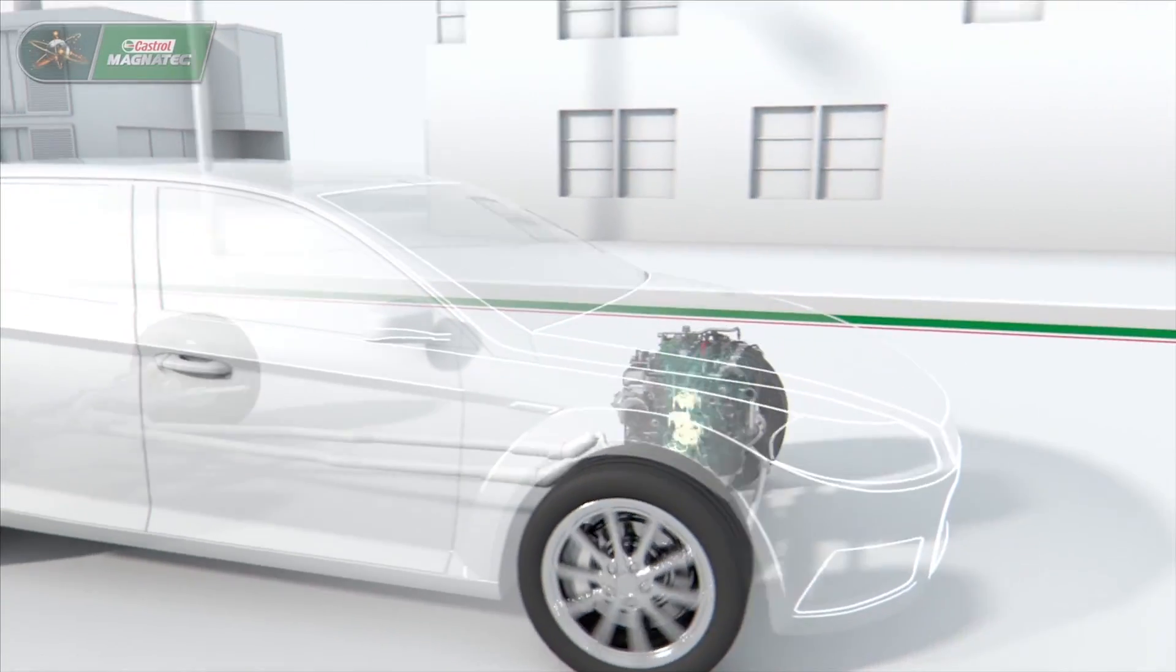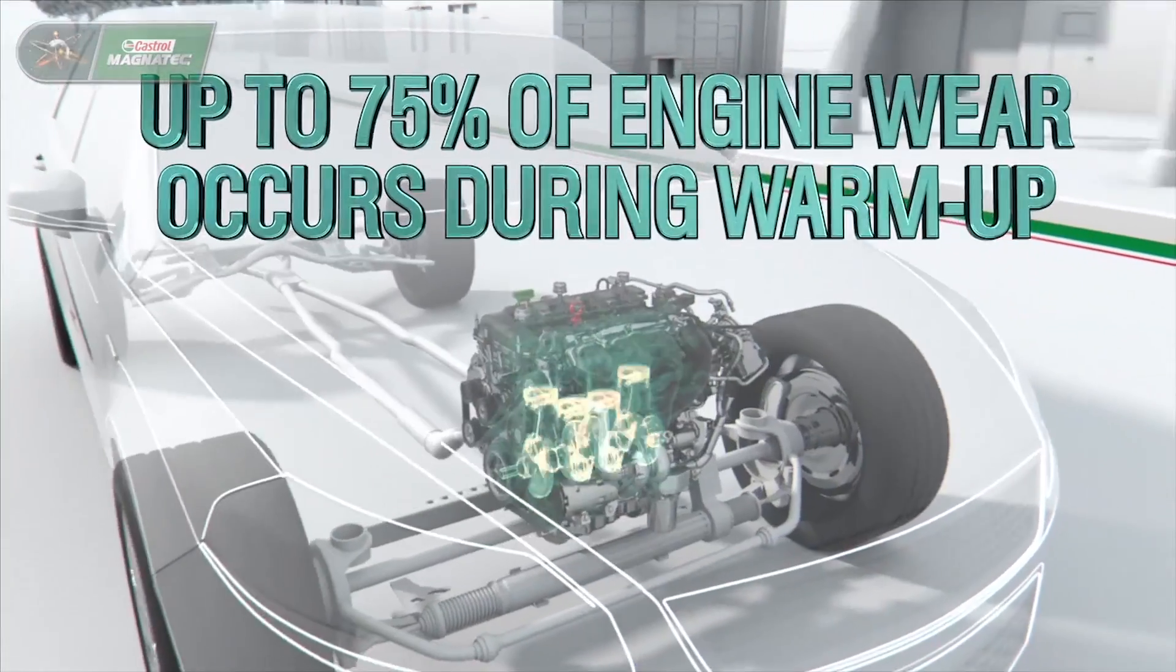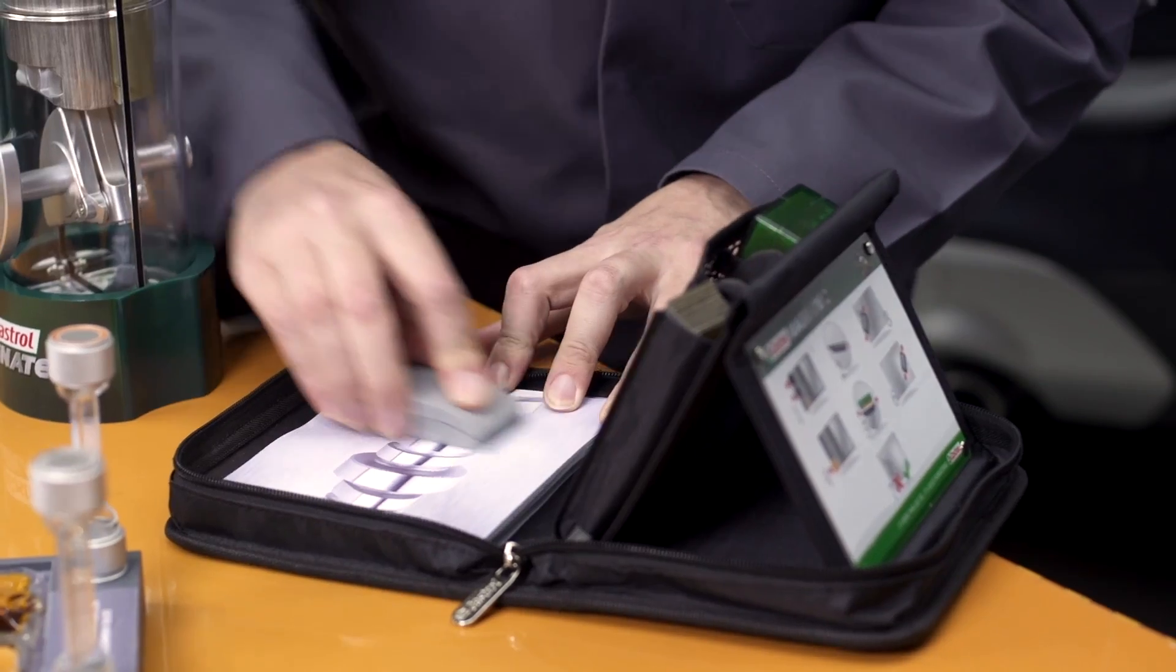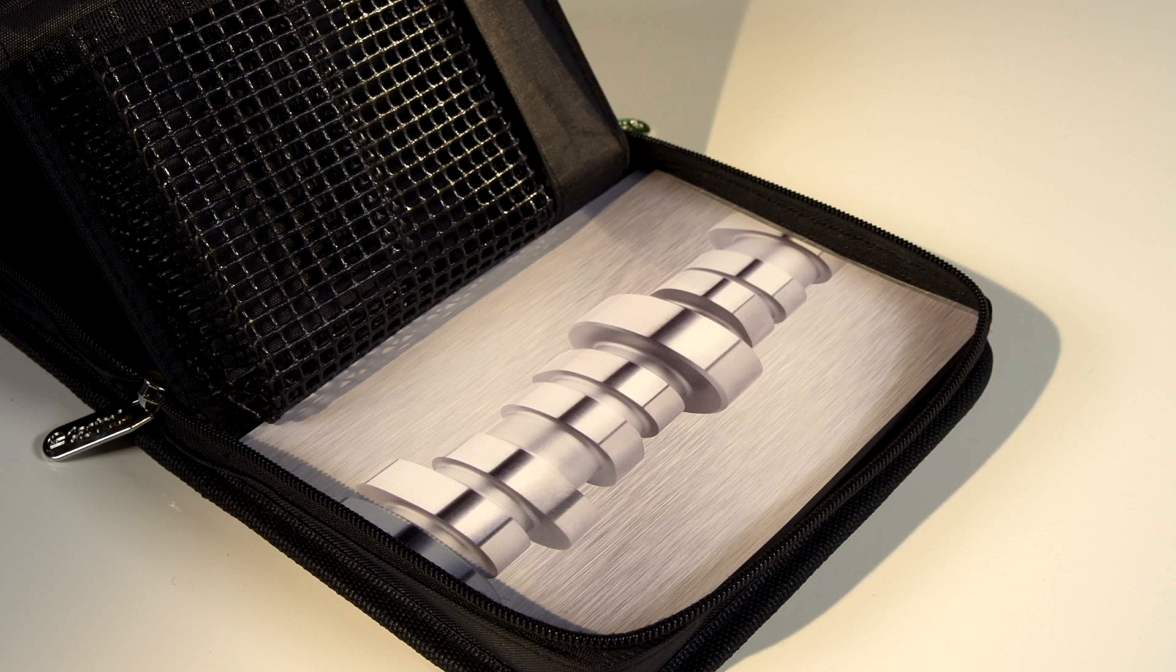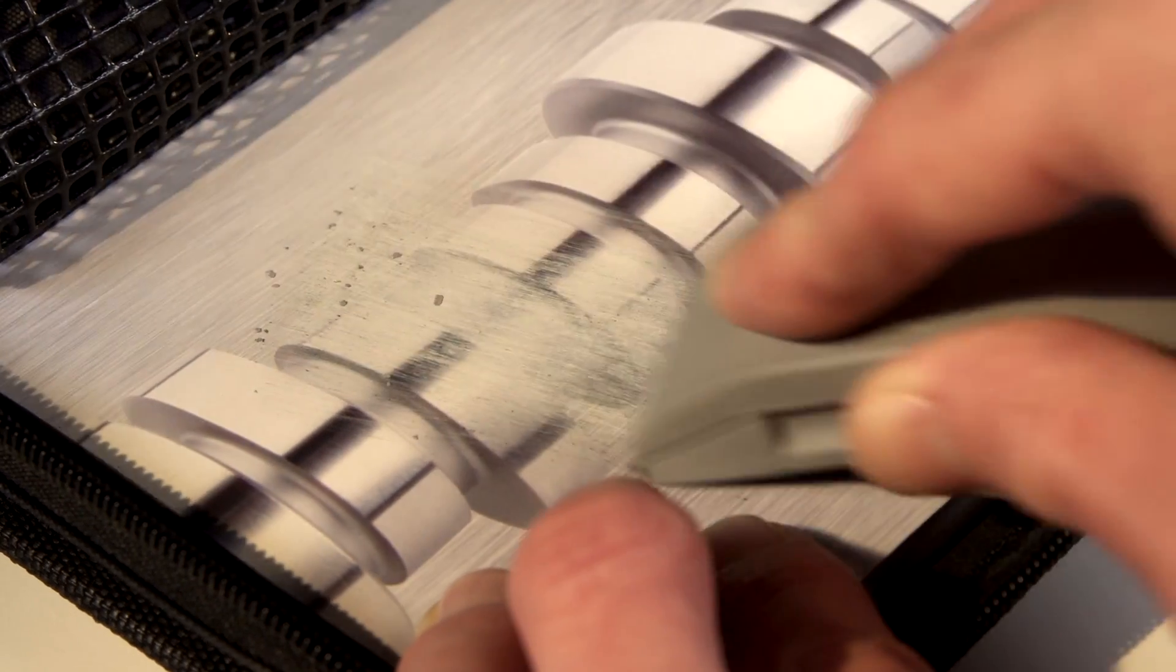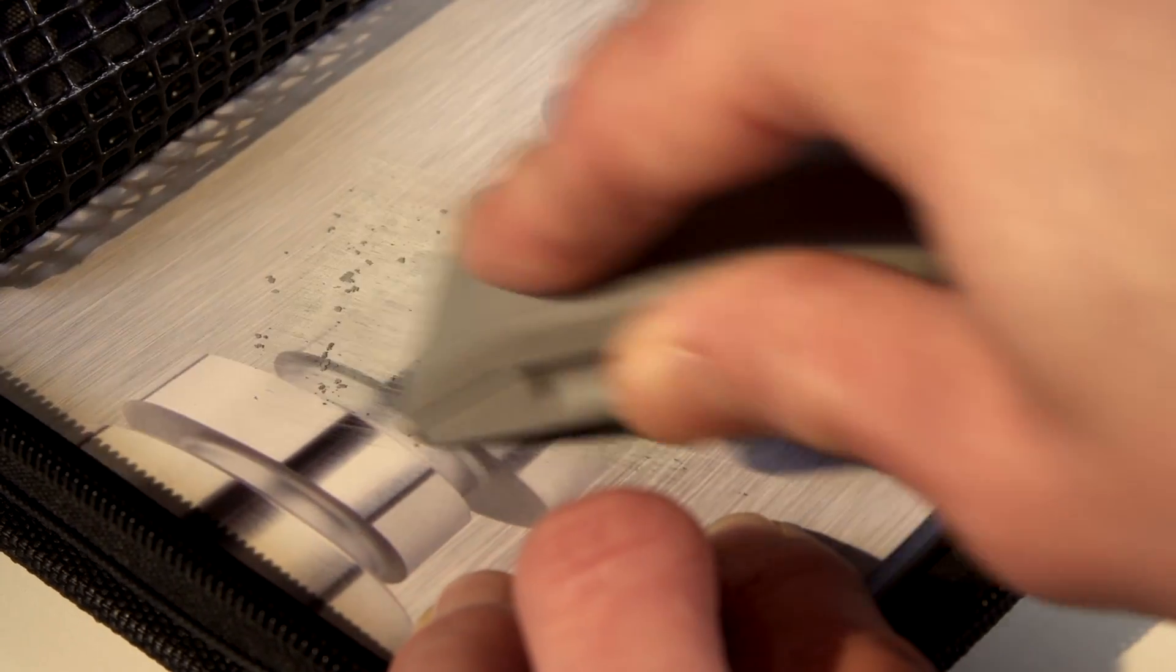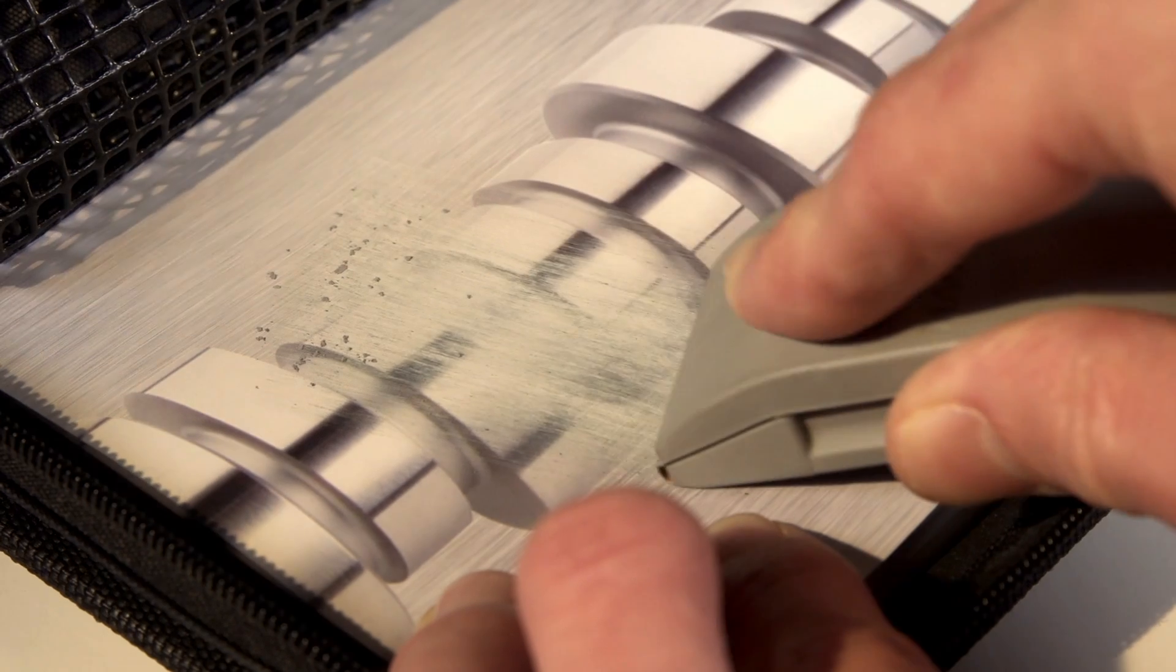Up to 75% of engine wear occurs during warm-up. The Castrol Magnatec Rough and Smooth Kit is a technical demonstration of the surface wear that can occur in an engine. The printed paper represents the engine surface. Rubbing the sandpaper block over the paper simulates the damaging surface wear that can occur in an engine.